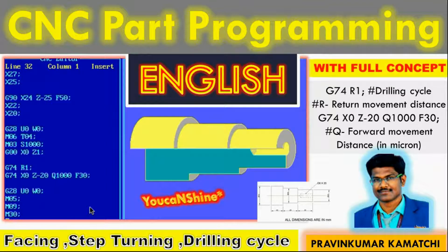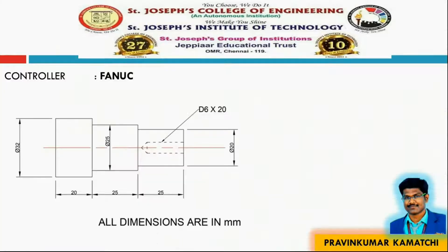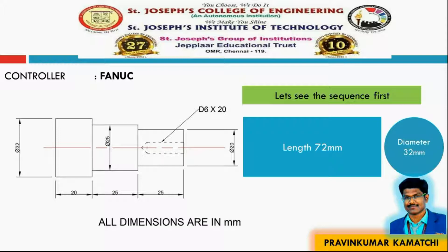Welcome! In this video we are going to learn CNC part programming, especially facing cycle, turning cycle, and drilling cycle. This is the given diagram. For this diagram we have to write the part program. First of all we have to know the sequence of operations. We have to take a workpiece — a cylindrical workpiece with a length of 72mm and 32mm in diameter.